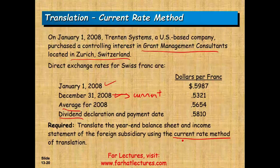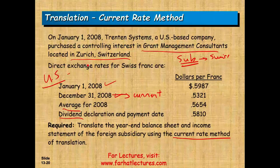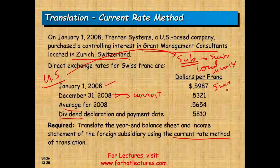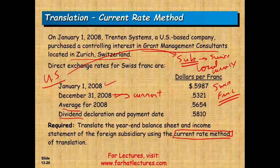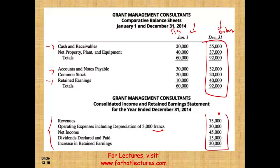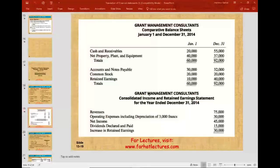We are asked to translate the year-end balance sheet and income statement of the foreign subsidiary using the current rate method. We use the current rate method because this is a subsidiary in Switzerland using the local currency — the Swiss franc — as its functional currency. They're not using the US dollar, it's not a hyperinflationary environment, and they're not using a third currency like the euro. That's why we use the current method. Now I'll pull the balance sheet and income statement into Excel and show you how to do the conversion.